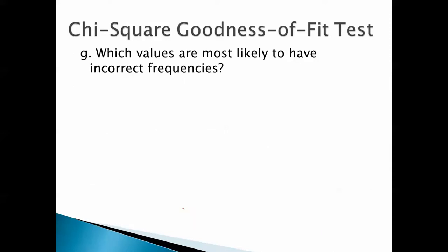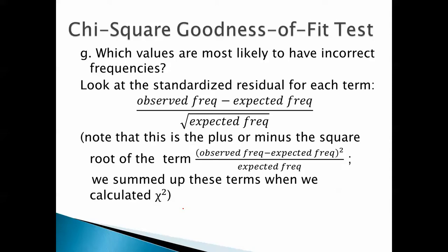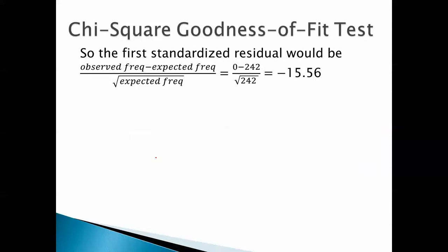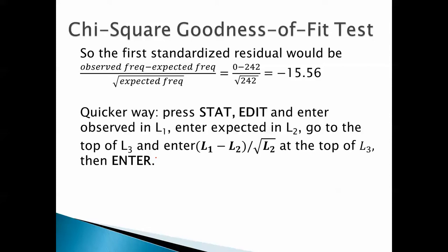Which values are most likely to have incorrect frequencies? Well, one way to do this is by looking at the standardized residual for each term. That's the observed minus the expected all over the square root of expected. Note that this is plus or minus the square root of the term that we saw earlier. We summed up those terms when we calculated chi-square. The first standardized residual will be observed frequency minus expected frequency over square root of expected frequency. 0 minus 242 all over square root of 242. That's negative 15.56.